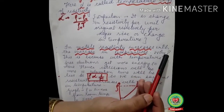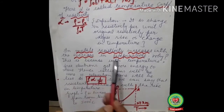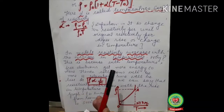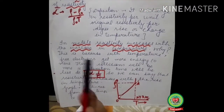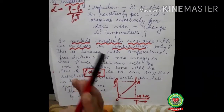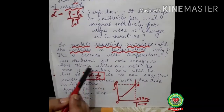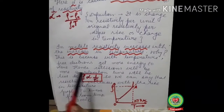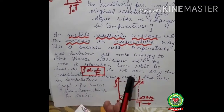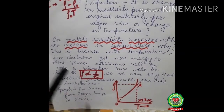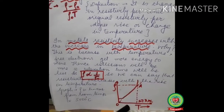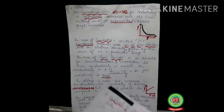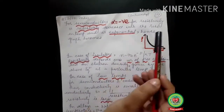Why does resistivity increase in metals? Because with increased temperature, free electrons get more energy. They travel very fast and collide with each other more frequently, so the relaxation time (tau) becomes less. Since rho is inversely proportional to relaxation time, if tau is small, resistivity is more. The graph for metals is linear — resistivity increases directly with rise in temperature, giving a straight upward line.